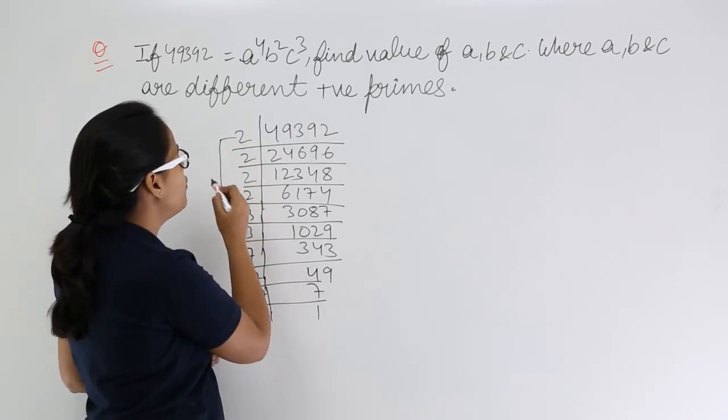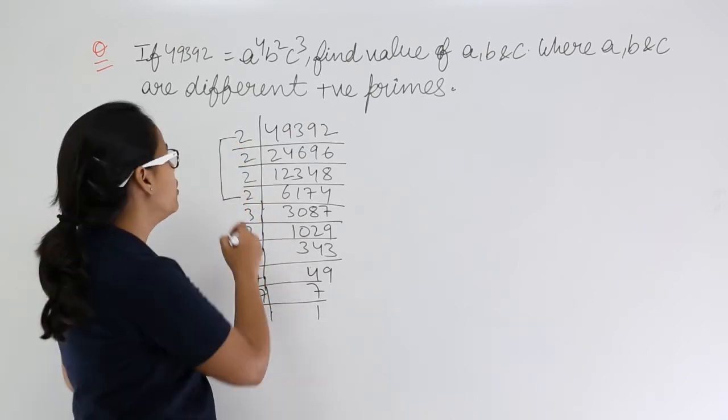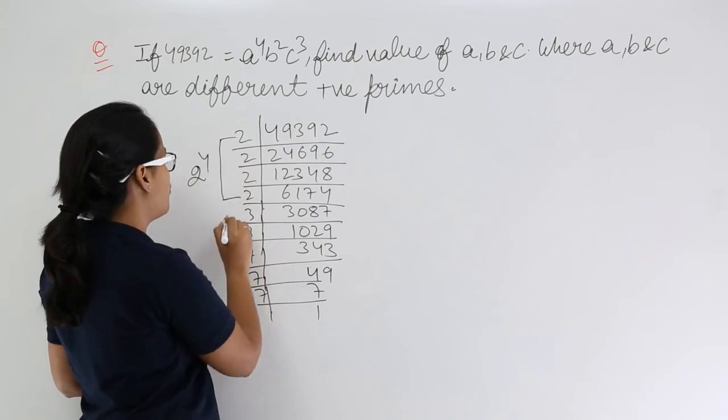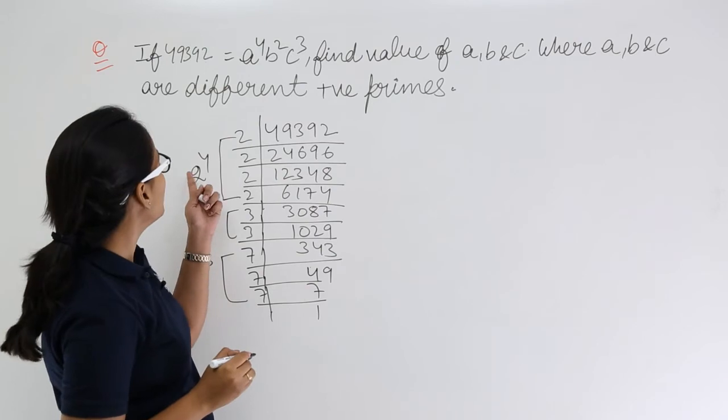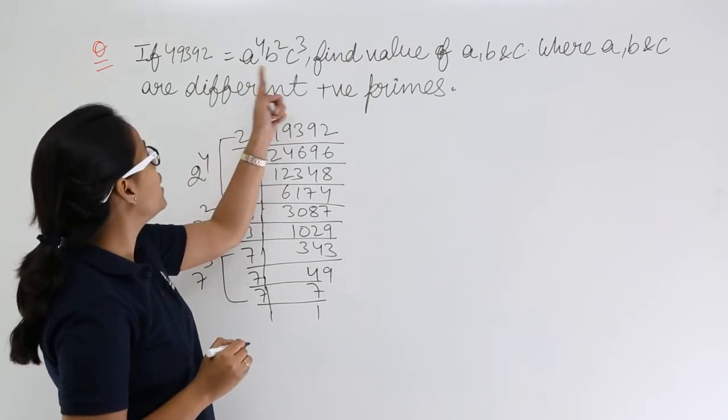Here you can see that 2 has been repeated 4 times. So 2 to the power 4, 3 to the power 2, and 7 to the power 3. Now you can compare all these values with a, b, and c.